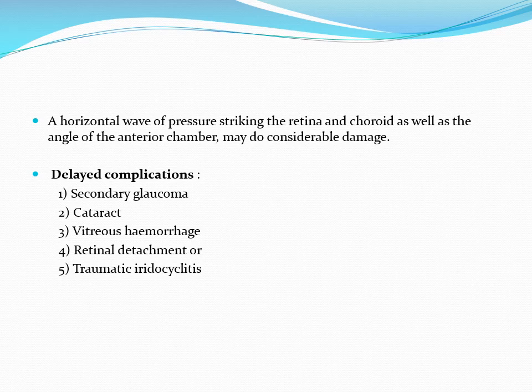Blunt trauma may result in delayed complications like secondary glaucoma, cataract, vitreous hemorrhage, retinal detachment, and traumatic iridocyclitis. If you remember the anatomical sequence it is easy to memorize: angle damage leads to secondary glaucoma, then lens causing cataract, then vitreous causing vitreous hemorrhage, then retina causing retinal detachment or iridocyclitis. These are the different manifestations of blunt injury.